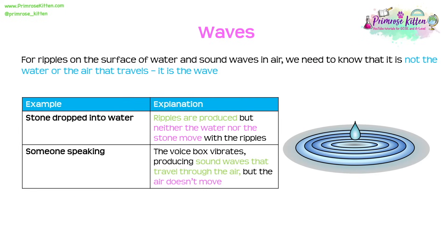For ripples on the surface of water and sound waves in air, it is not the water or the air that is travelling — it is the wave. If a stone is dropped into water, ripples are produced but neither the water nor the stone moves with the ripples. Similarly, a person speaking causes their voice box to vibrate, making sound waves that travel through the air, but that air is not moving.